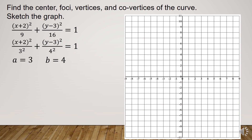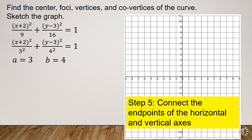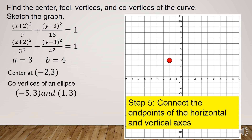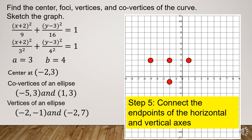Since we already have the vertices and co-vertices, the endpoints of the horizontal and vertical axes, we are now going to plot these on the Cartesian plane. The center is at (negative 2, 3). The co-vertices are at (negative 5, 3) and (1, 3). The vertices are at (negative 2, negative 1) and (negative 2, 7). We connect all the endpoints to form the graph of the ellipse.